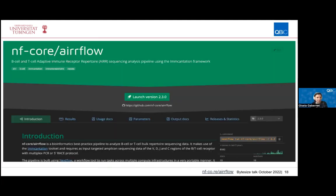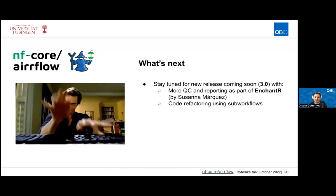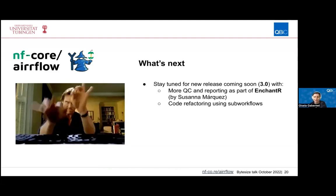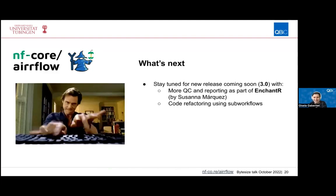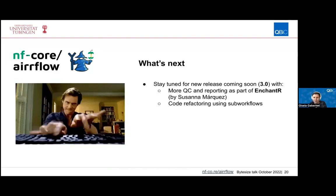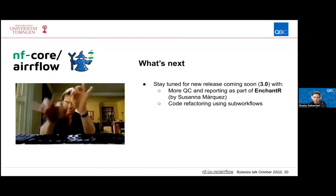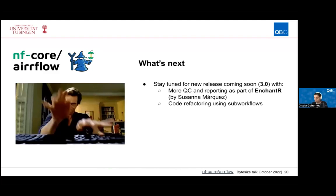All documentation for NFCore Airflow can be found on the NFCore website, where there are also example results of the pipeline when the full tests are run on AWS. Stay tuned for a new release coming very soon — this week or next — which includes more quality control and reporting as part of the Enchanter tool and code refactoring using sub-workflows.